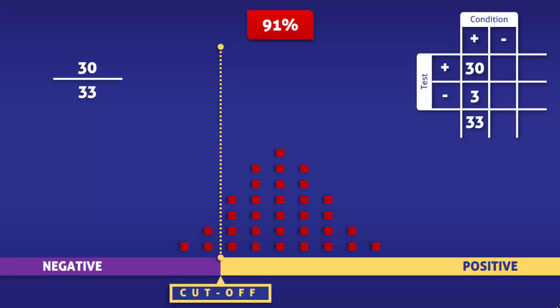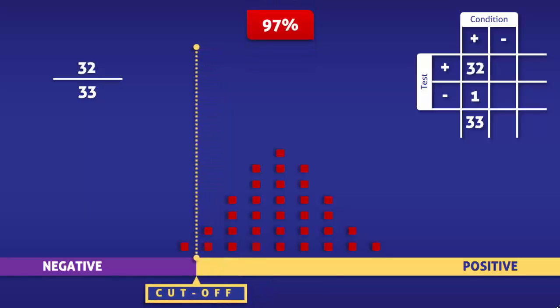If the cutoff level for a positive test was shifted towards the normal value, then the number of true positives would increase. Thus, the condition would be detected in a greater percentage of patients that have it, and the sensitivity of the test would be higher.